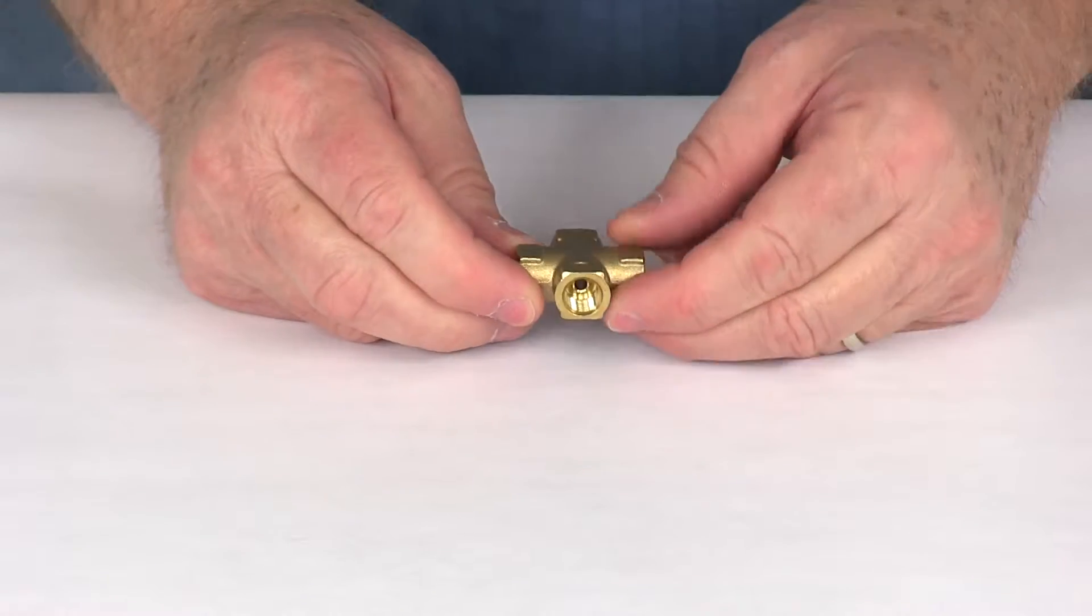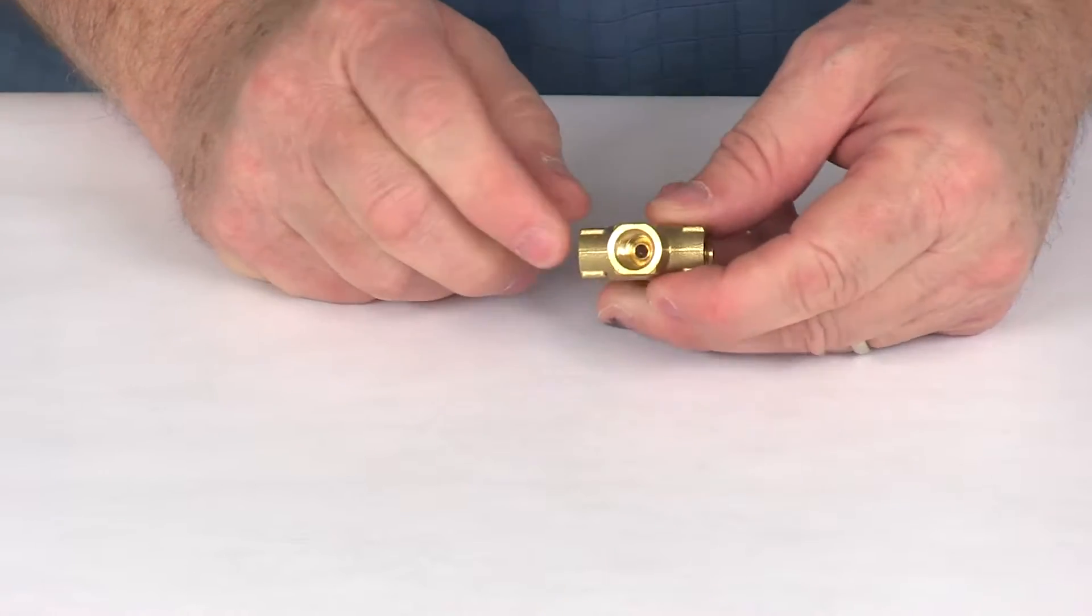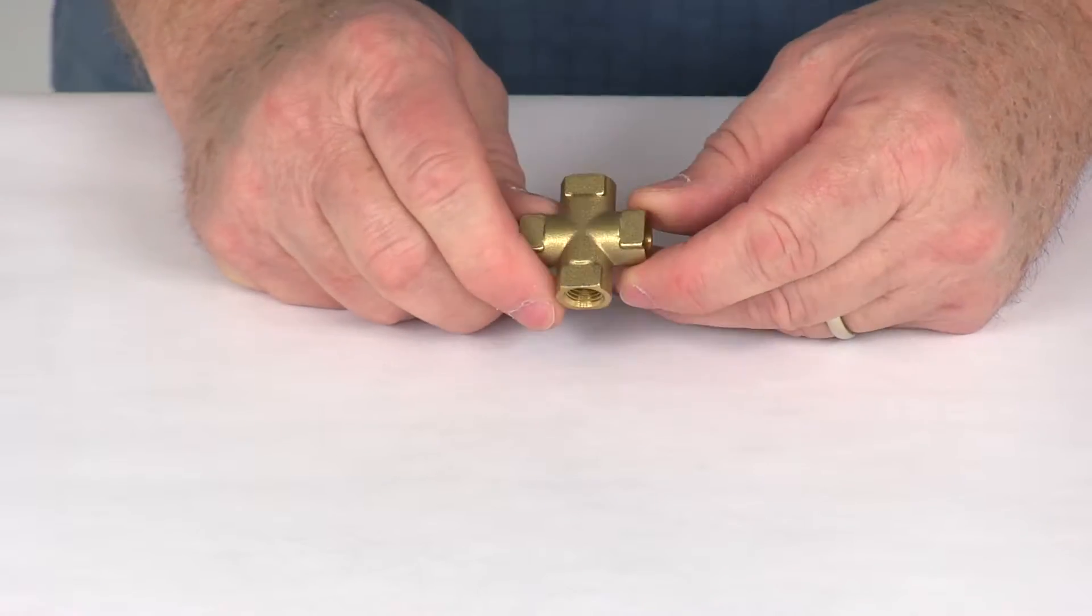Today we're going to take a look at the Kodiak brass cross fitting with the 3/16th of an inch female inverted flares for hydraulic brake hoses.